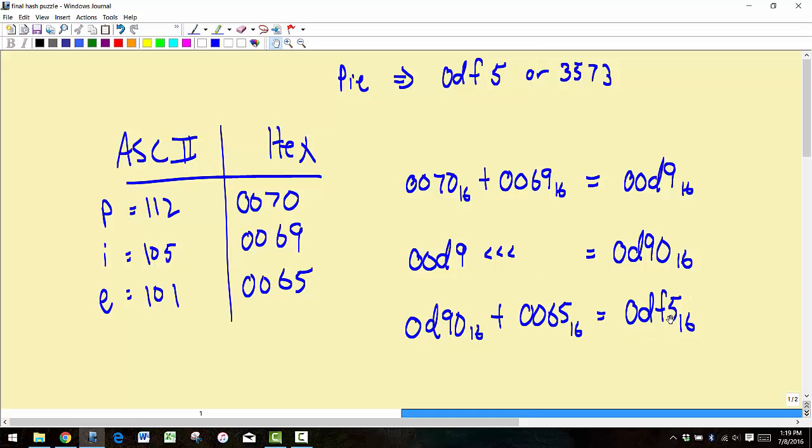So essentially, it's kind of incredible if you think about this: the word PIE is represented as this complex number 3573. So the idea is if you're given this number here, can you verify that it represents PIE?